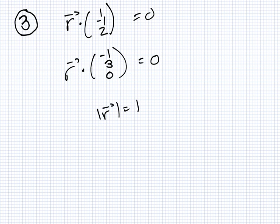Find a unit vector — pause. Okay. He said, find a unit vector. Ding! Okay, continue. Has a zero dot product with 1, minus 1, 2. Yeah. Ding!